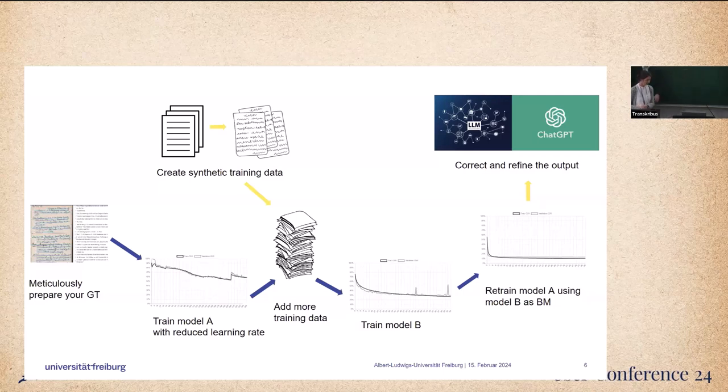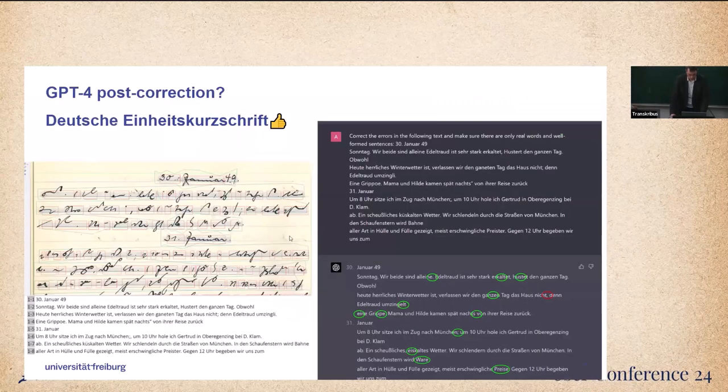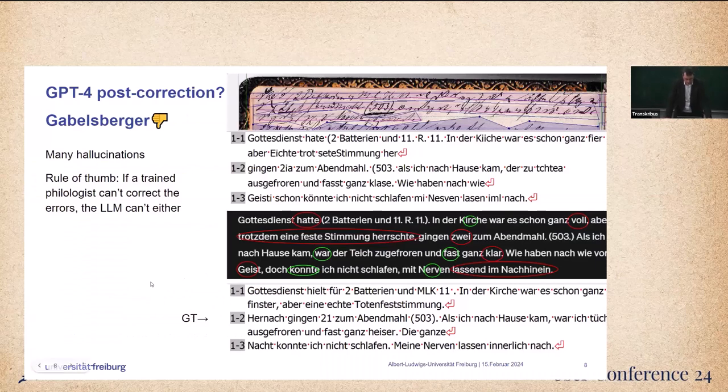So speaking of using additional tools, we played around with GPT-4 for post-correction of shorthand HTR results, and our results were mixed. With Deutsche Einheitskurzschrift, as you can see here, the quality was very good. Almost all errors were corrected by the language model, as you can see with the green marks down below here.